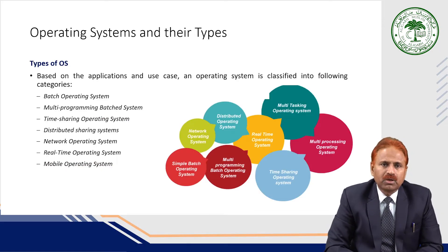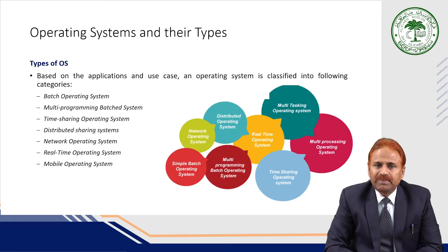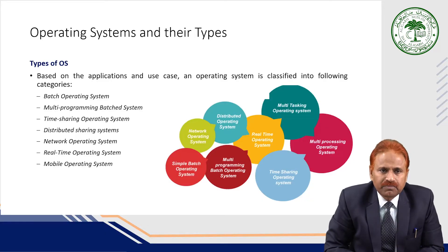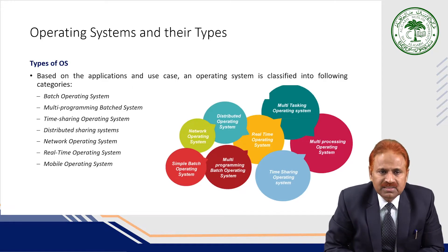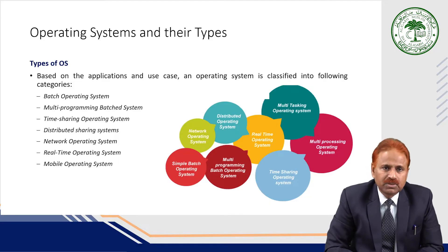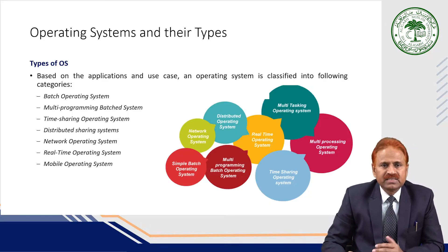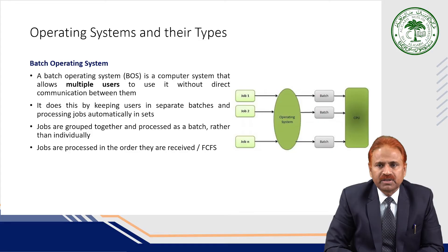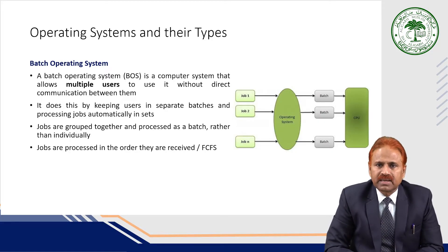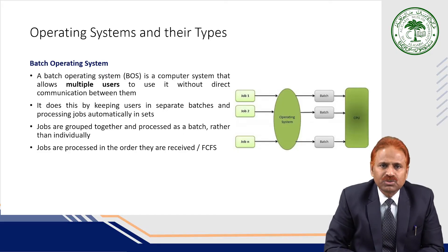Based on application and use case, an operating system is classified into the following categories: batch operating system, multi-programming batched system, time sharing system, distributed sharing system, network operating system, real-time operating system, and mobile operating systems. First, we will see the batch operating system. A batch operating system, simply known as BOS, is a computer program or system that allows multiple users to use it without direct communication between them.